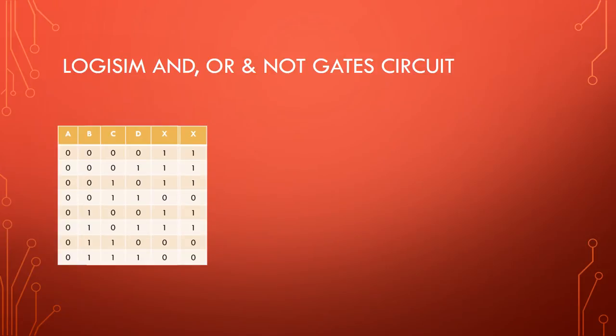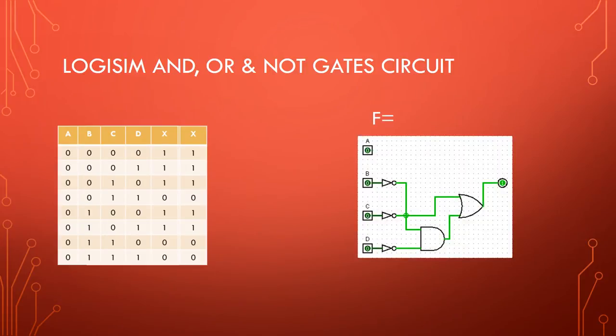Revisiting the truth table, we can see that the outputs are identical whether input A is 1 or 0. Because the A input has no effect, it will not require a connection in our integrated circuit. In Logisim, we represent this function with three sets of NOT gates or inverters, one AND gate and one OR gate.